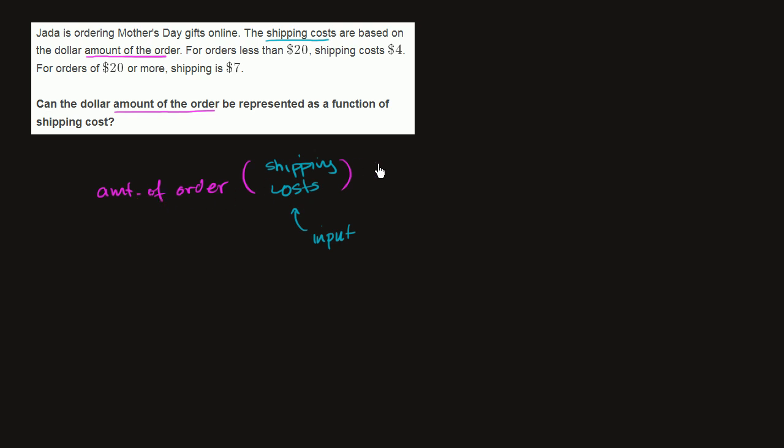In order for this to be represented as a function, we have to input a shipping cost where this relationship is defined. We need to input a shipping cost, put it into our relationship, and get exactly one dollar amount of the order. If we get multiple dollar amounts of the order, then it's still a relationship, but it's not going to be a function.